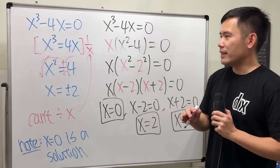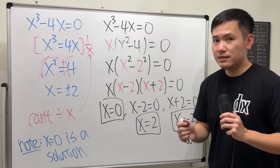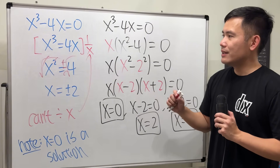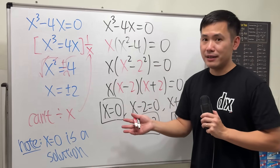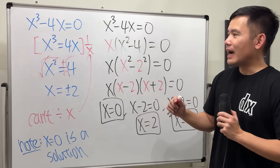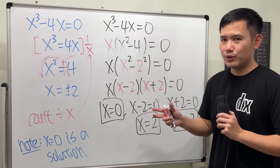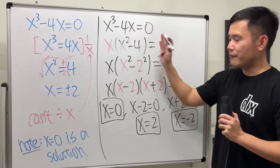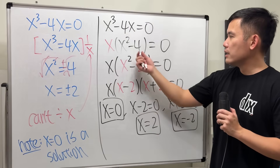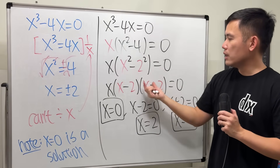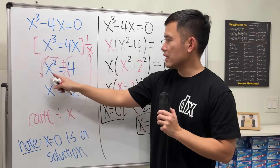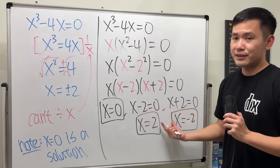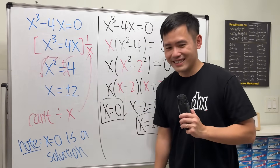Does this mean you can never divide by x? It really depends on the situation. If you know x is not equal to 0, then you can divide by it. But in general, do not divide by variables — usually that's a good idea. To be super safe, try to factor it. This also shows why the quadratic part x squared minus 4 gives us two solutions, and why when we take the square root on both sides we have to put a plus or minus — because of factoring. Hopefully this helps.